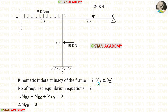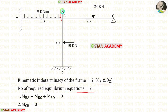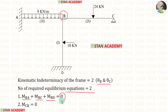In this analysis, we have to find these two unknowns — theta B and theta C. To find them, we need two equilibrium equations. One equation can be made at joint B, where we have three moments: MBA, MBC, and MBD. When we add these three moments, the sum will be zero.